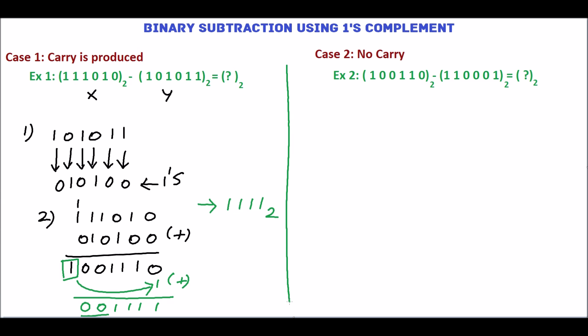Next, we will solve example 2. Let's take the numbers as x and y. Step 1, find the 1's complement of y.